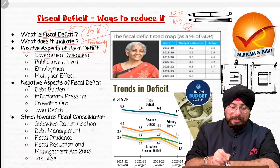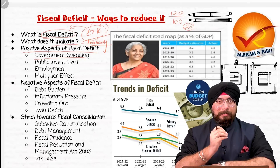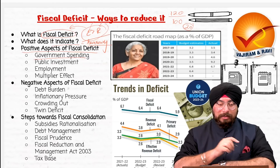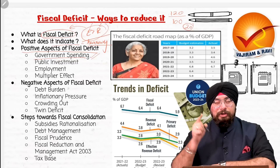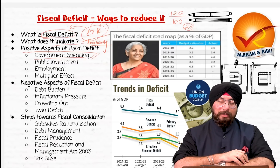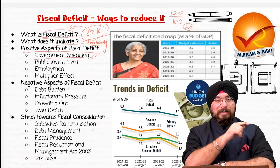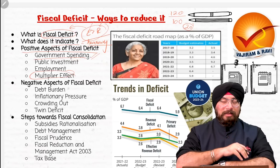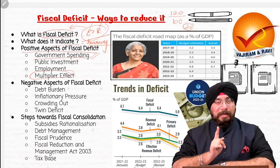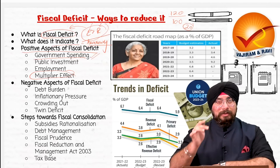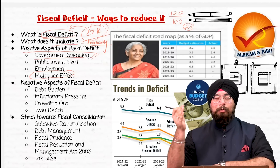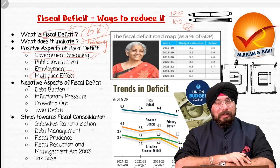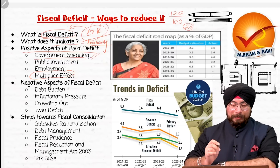First positive aspect is government spending. When government is spending more and more, ultimately government expenditure is a part of our GDP — our gross domestic product. So when government spending increases, eventually GDP of the whole economy also increases. Government capital expenditure has a multiplier effect in the economy — one rupee spent by the government in building capital gives returns two, three or even four to five times that investment.